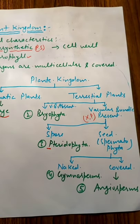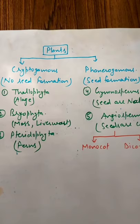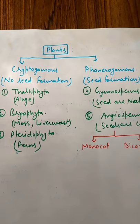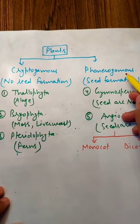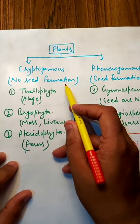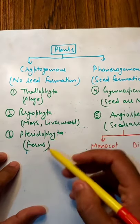We will discuss these one by one in detail in coming lectures. Plants can also be divided into two different categories on the basis of formation or non-formation of seed. If no seed is forming, then it will be known as cryptogamous. And second is phanerogamous. So no seed formation comes under cryptogamous.